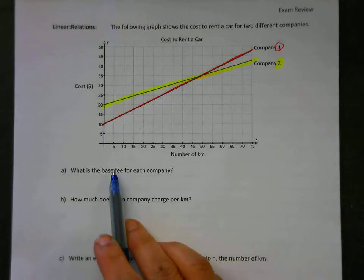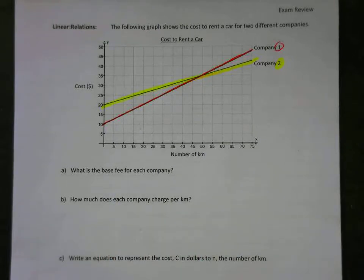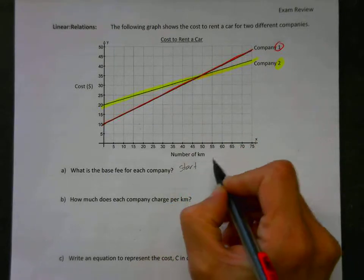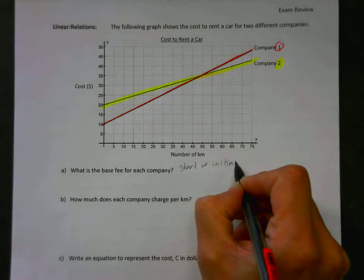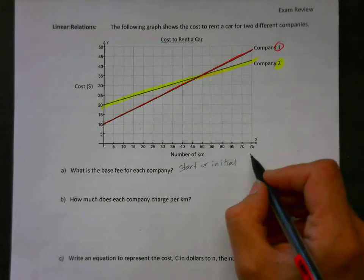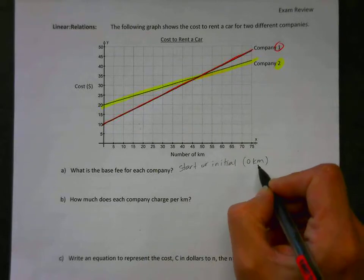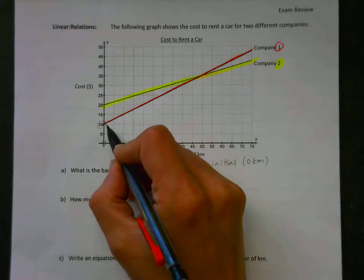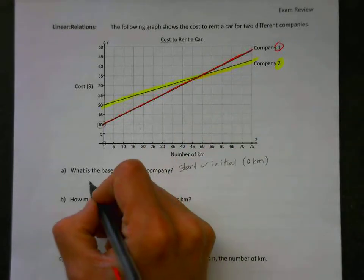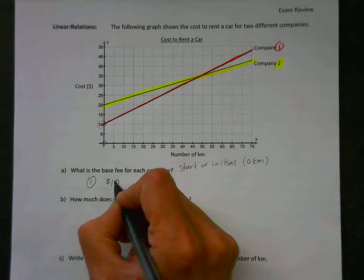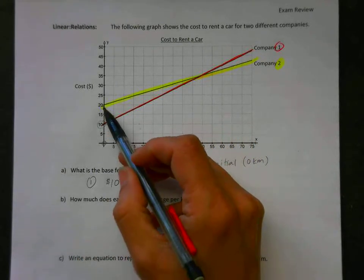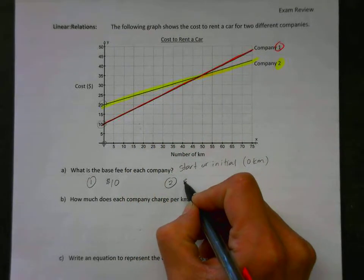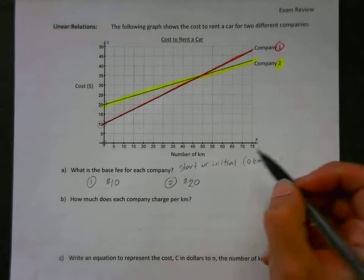The first question is: what is the base fee for each company? Well, base fee could be replaced with the word start or initial, so we're looking for the start or initial fee. The initial fee is before you've even gone anywhere, so that means we're at zero kilometers. If we go over here and look at the graph at zero, look up here: this one starts at ten, that's company number one. Company number one starts at ten dollars. If we go over and keep looking up, we run into the yellow line, which is company number two. So company number two's initial fee is twenty dollars.